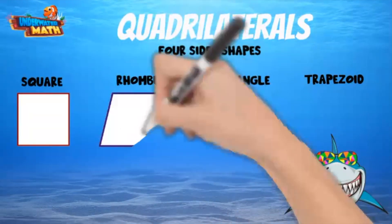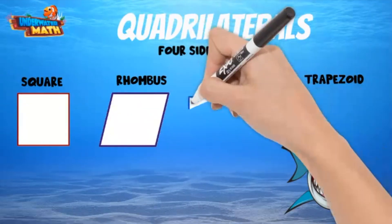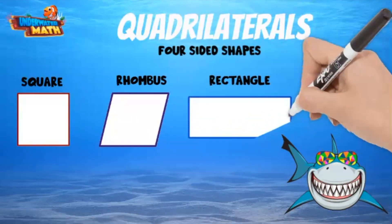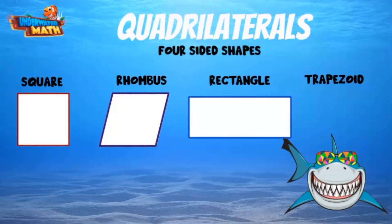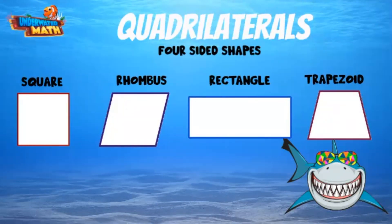Rectangles have four right angles but different side lengths. Trapezoids are funky-looking shapes that have two acute angles and two obtuse angles. They do not have to have equal side lengths.